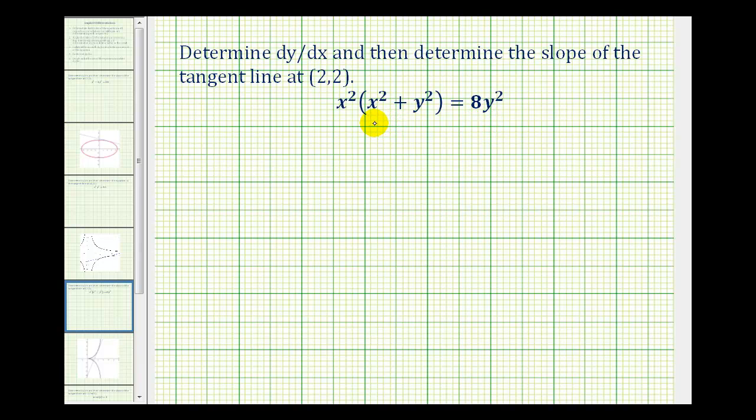So we'll determine dy/dx using implicit differentiation. We'll take the derivative of both sides with respect to x. While we're setting this up, let's go ahead and distribute x squared as well. So we'll have x to the fourth plus x squared times y squared equals the derivative of 8y squared with respect to x.